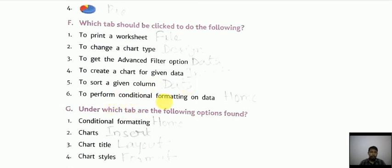Then next to perform conditional formatting on data, it is home. Under which tab are the following options found? Conditional formatting under home, charts under insert, chart title under layout, then chart styles under format. So that's all for today, thank you.